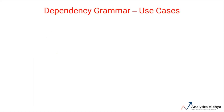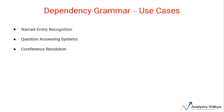Dependency grammars can be used in different use cases. For example, they are used to solve named entity recognition problems. They can be used to understand relational and structural aspects of question answering systems. They are also used in co-reference resolution, in which the task is to map pronouns to their respective noun phrases. They can also be used for text summarization problems and as features for text classification problems.